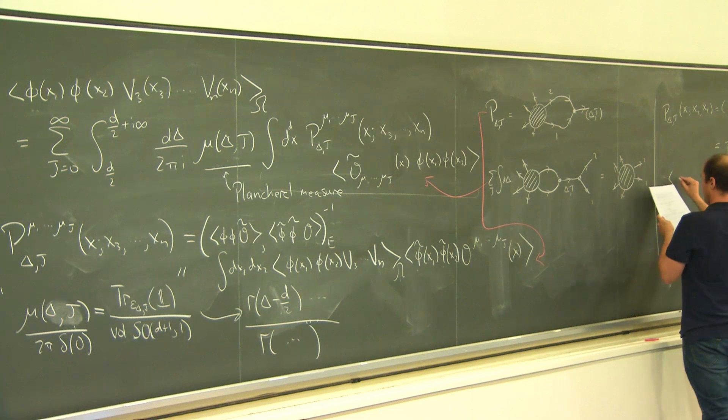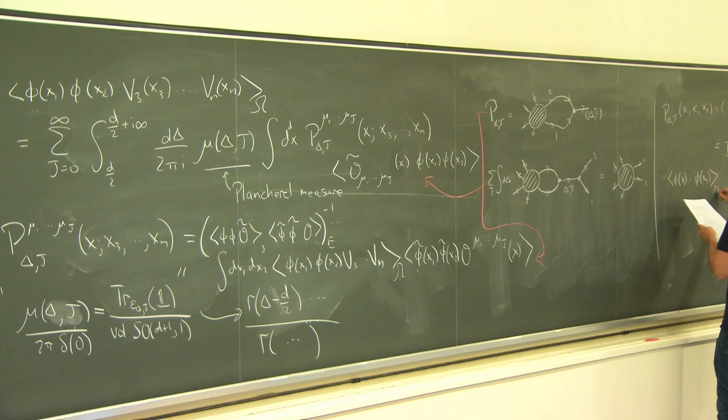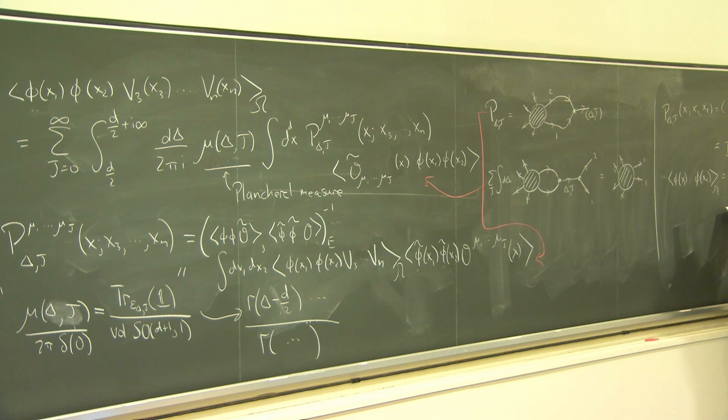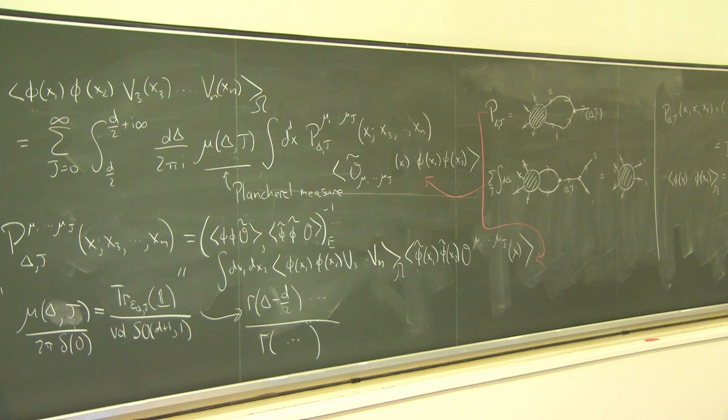The partial wave in this case has very simple position dependence, and all the interesting stuff in it is captured in this function of delta and J. We can take this formula and plug it in to get another expression for our four-point function. The statement is that this four-point function is a sum over J, integral over the principal series, of the Plancherel measure times I(delta,J) times something I'll call psi. The function I depends on the entire physical four-point function.